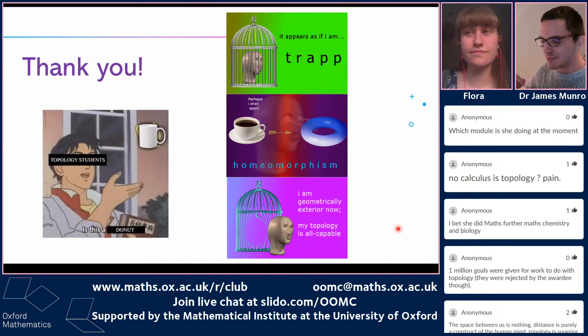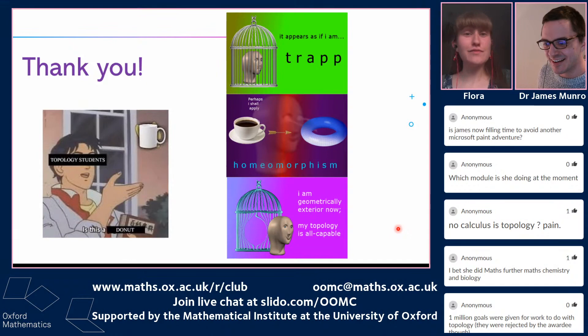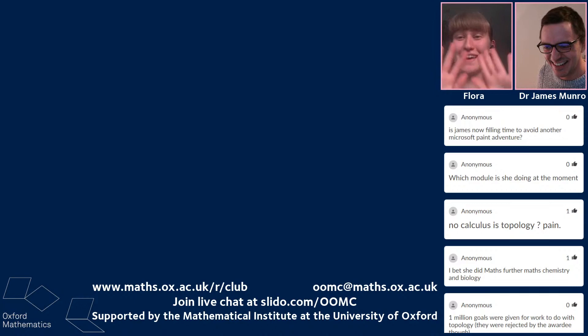Someone asks what module Flora is doing at the moment. In first year everything is compulsory; in second year there's quite a lot of choice. This term she's done rings and modules, which is abstract algebra, integration with theory behind integration, topology, statistics with rigorous mathematical hypothesis testing, and a short course on integral transforms, which is really useful in applied maths.